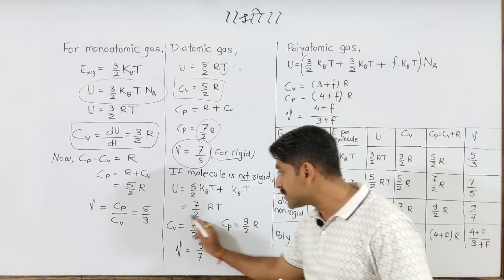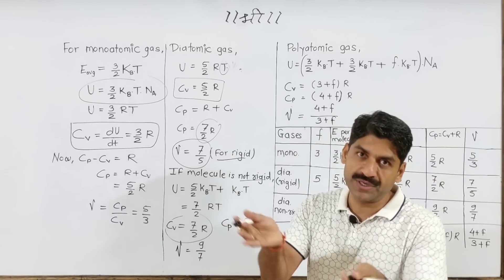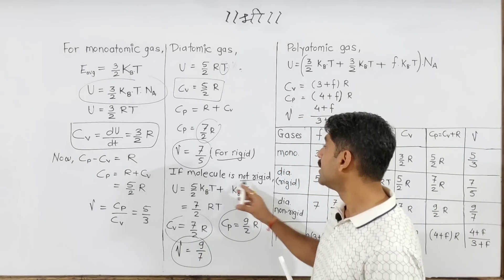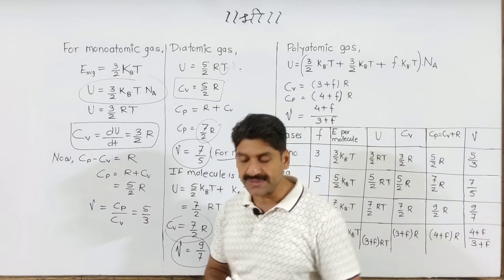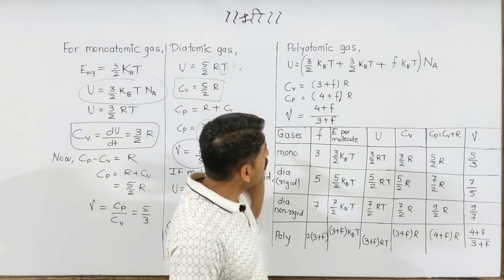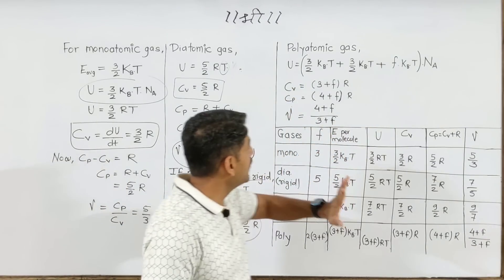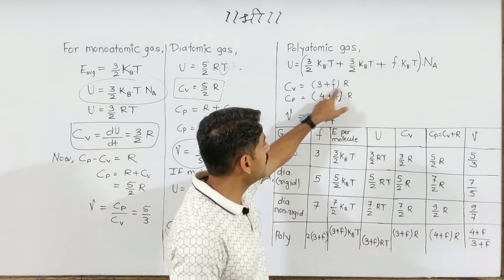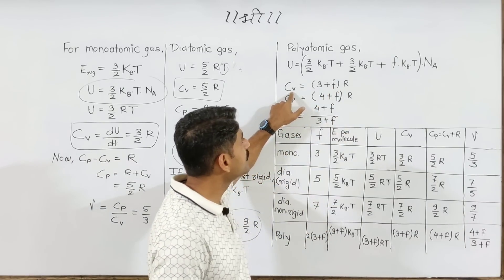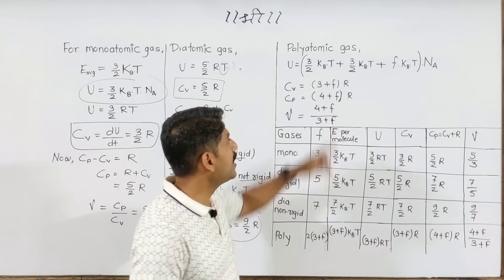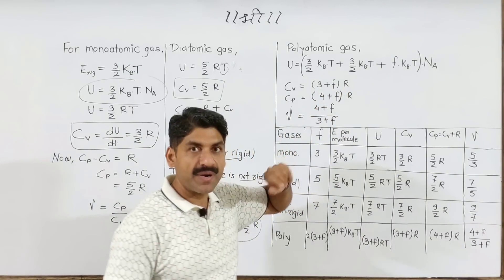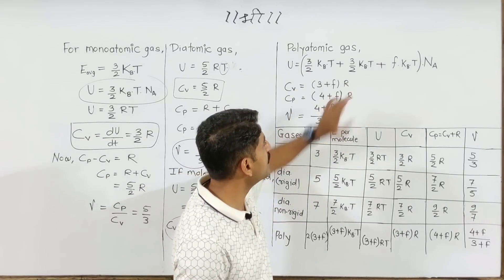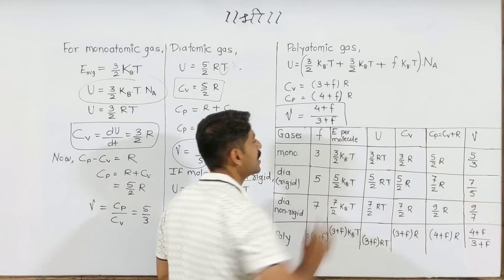For non-rigid diatomic gas, Cv is 7/2 R; adding R gives Cp as 9/2 R, so gamma equals 9/7. For polyatomic gases, remember that degrees of freedom F are not fixed — instead of 3, it becomes 3 plus F. So Cv equals (3 plus F) into R, and adding R gives Cp.